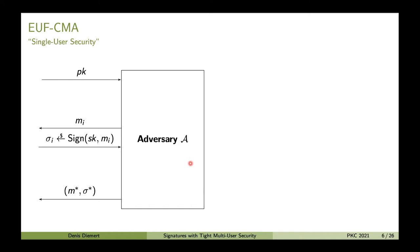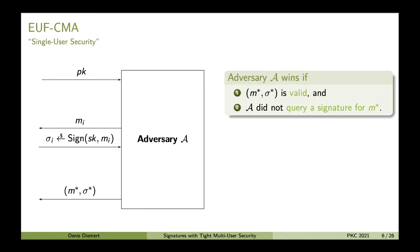On the slide you see the standard security experiment. The adversary receives the public key of the signature scheme as input, and then gets the opportunity to query for signatures of messages of its choice that are signed under the secret key corresponding to pk. The adversary can query for as many signatures as it wants, and in the end it will output a message-signature pair (m*, σ*).